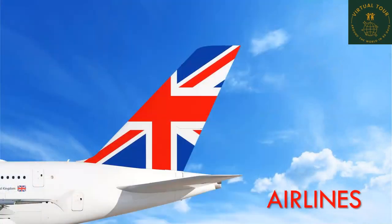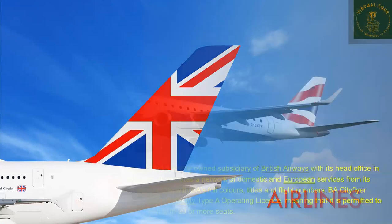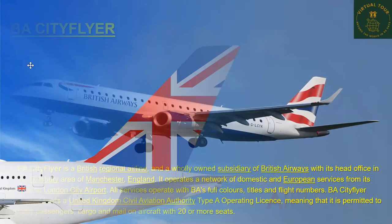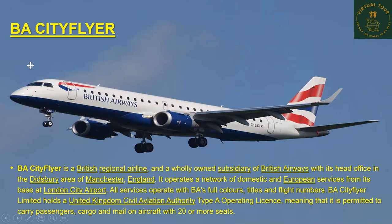Let's look at some of the airlines of the UK. The first is BA City Flyer, a British regional airline and wholly owned subsidiary of British Airways, with its head office in the Didsbury area of Manchester, England. It operates a network of domestic and European services from its base at London City Airport. All services operate with BA's full colours, titles and flight numbers. BA City Flyer holds a UK Civil Aviation Authority type A operating licence, permitting it to carry passengers, cargo and mail on aircraft with 20 or more seats.